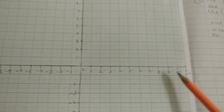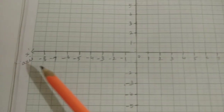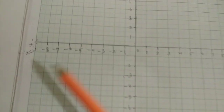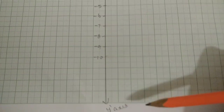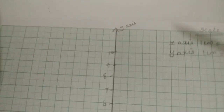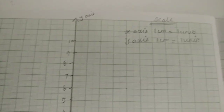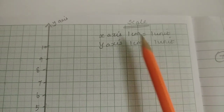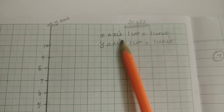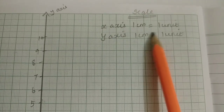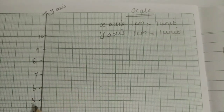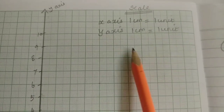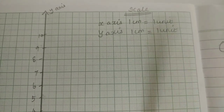In the graph, in the center we draw the x-axis, x-dash axis, y-dash axis, and y-axis. The scale is 1 cm equal to 1 unit on both the x-axis and y-axis.